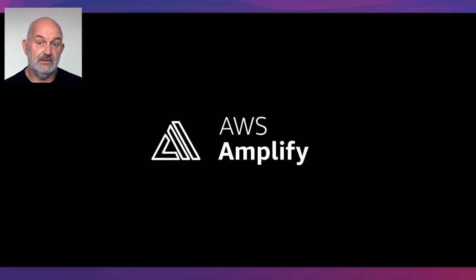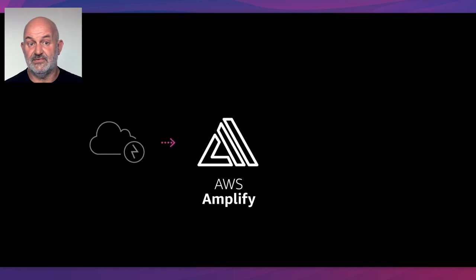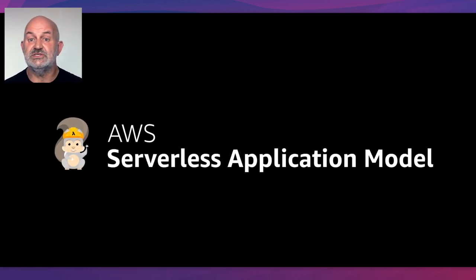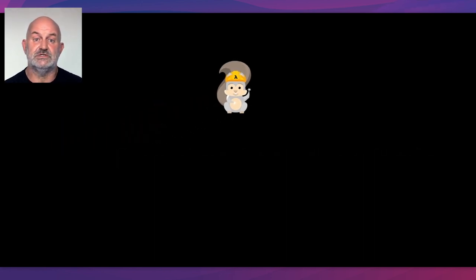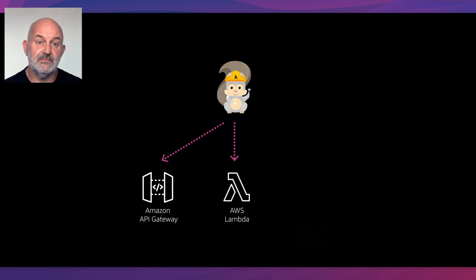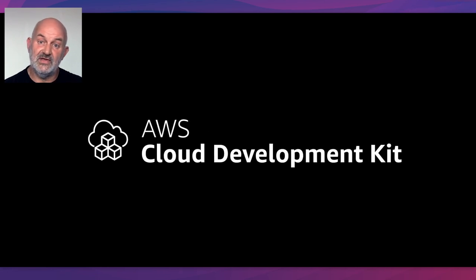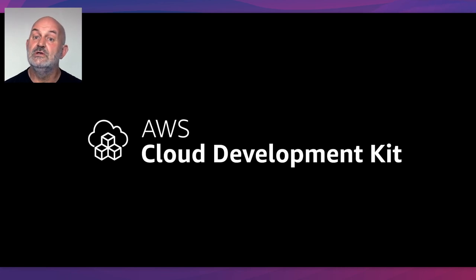At AWS, we've developed a number of tools that abstract away the undifferentiated heavy lifting involved in building applications. There's AWS Amplify, which provides front-end developers with a fast, easy way to develop cloud-connected mobile and web applications on AWS. We also created the AWS Serverless Application Model, or SAM, to help developers work with back-end serverless services like Amazon API Gateway, AWS Lambda, and Amazon DynamoDB.